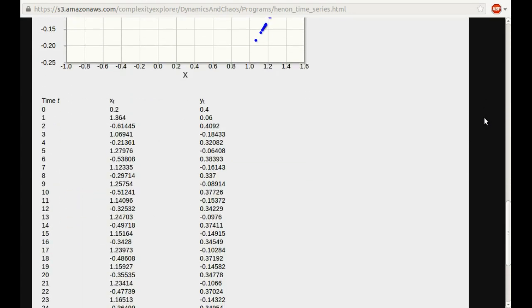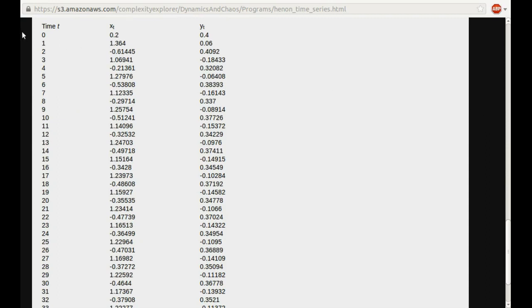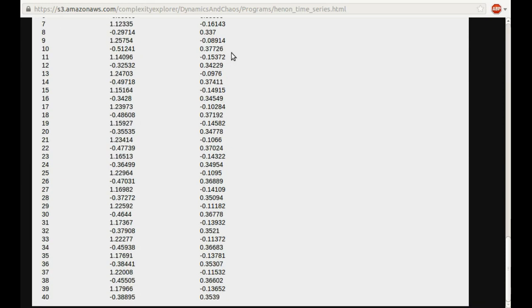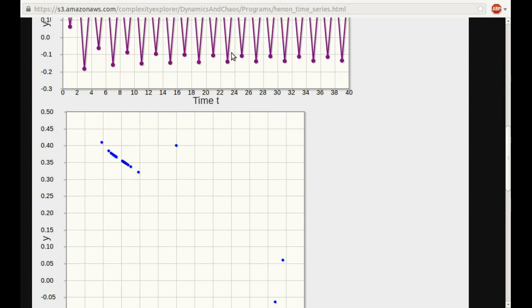Let me just slide down here. It also produces a list of numbers. Here's our initial condition, 0.2, 0.4. The first iterate was 1.364, 0.06. That we did in the video. For the quiz, you should have calculated these values, minus 0.614, plus 0.492. And computers being what they are, just keep doing this again and again, produce this list of numbers.